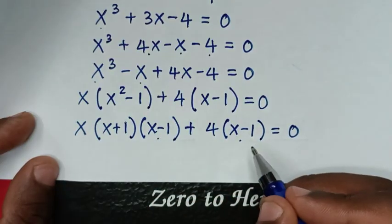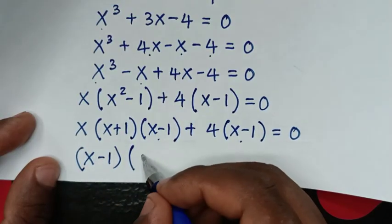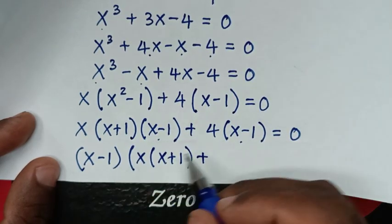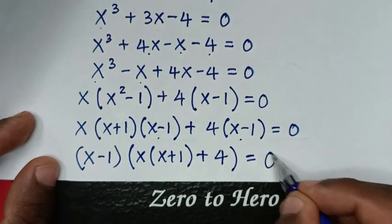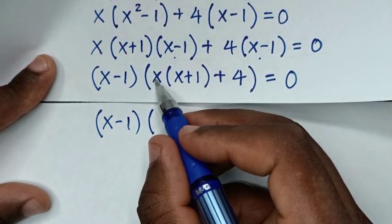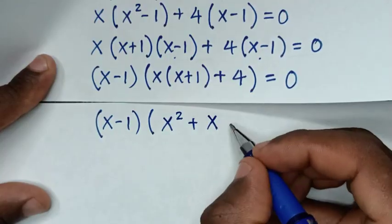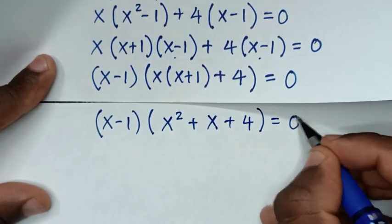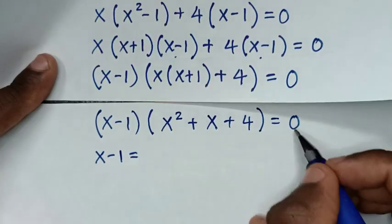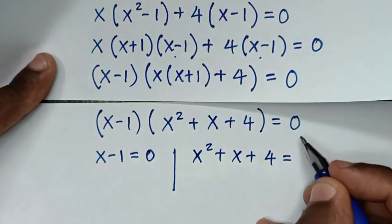Factoring out (x minus 1), we get (x minus 1)(x(x plus 1) plus 4) equals 0, which is (x minus 1)(x squared plus x plus 4) equals 0. This gives two solutions: the first is x minus 1 equals 0, and the second is x squared plus x plus 4 equals 0.